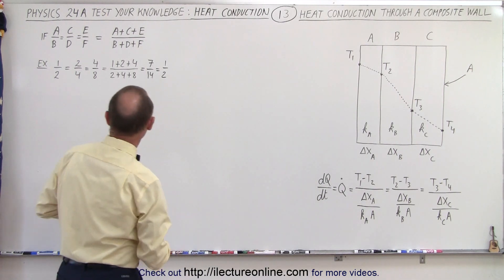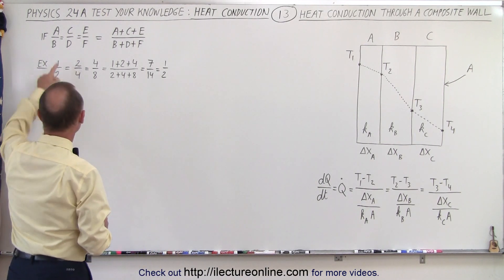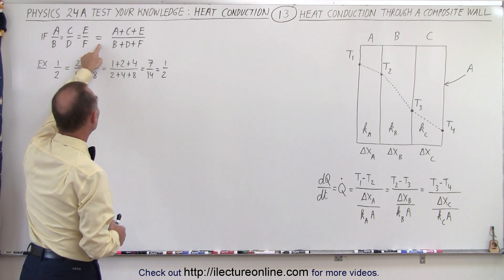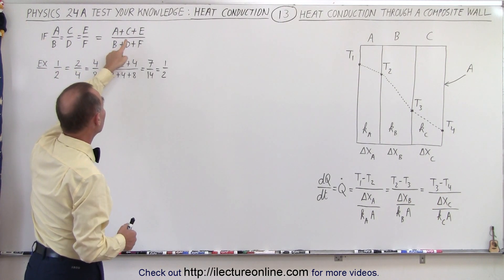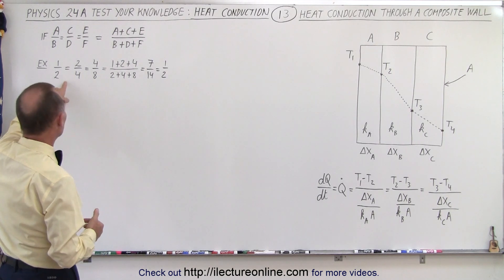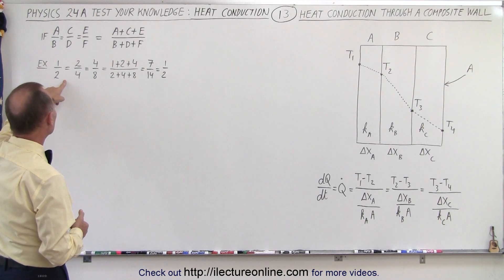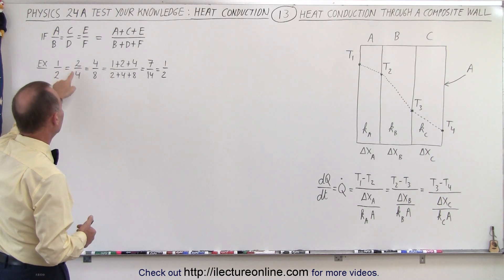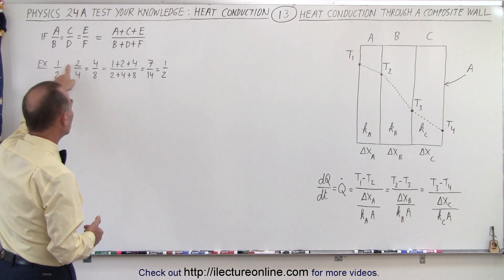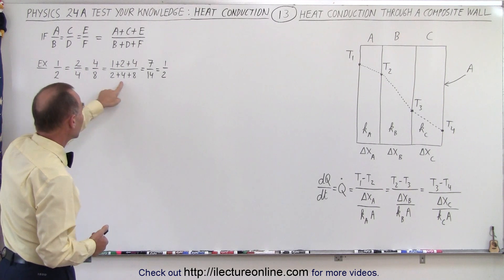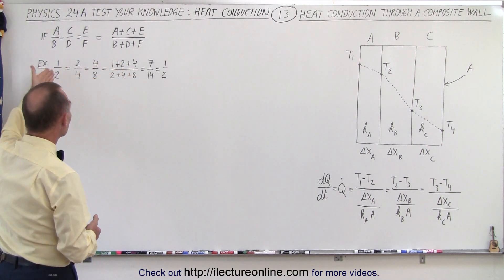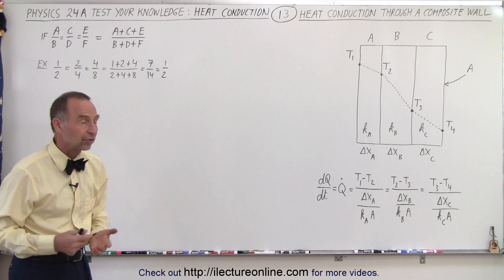We use the concept that if we have fractions equal to each other, that must equal the sum of the numerators divided by the sum of the denominators. For example, one-half equals two-fourths equals four-eighths. If we add the numerators together and add the denominators together, that ratio again equals the ratio of those fractions.